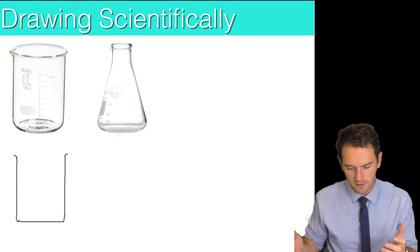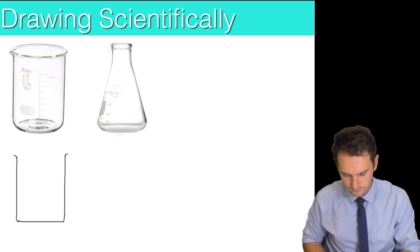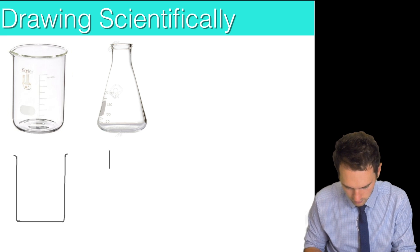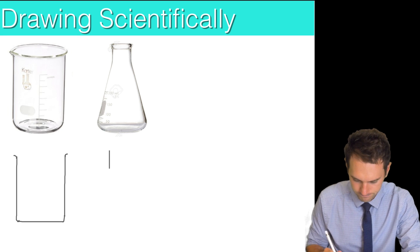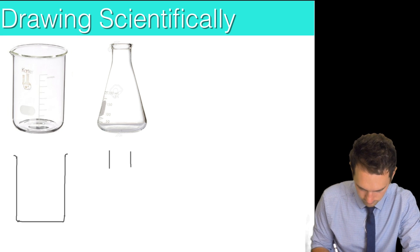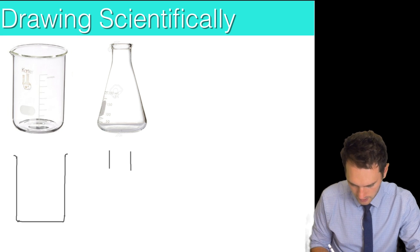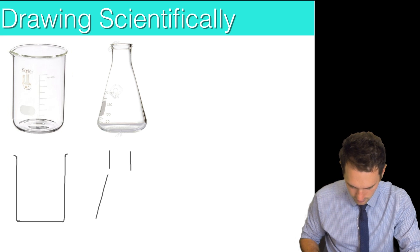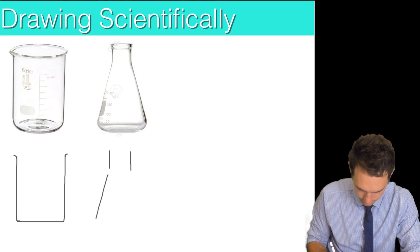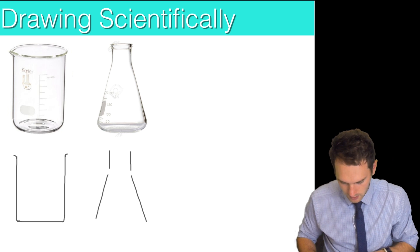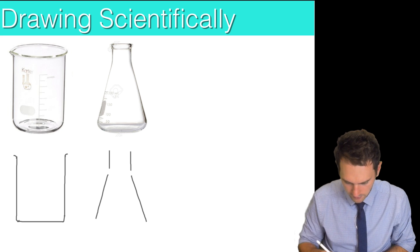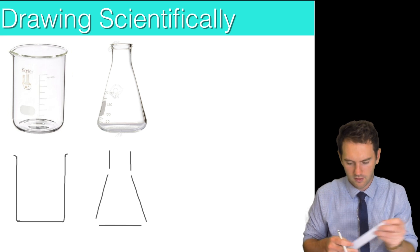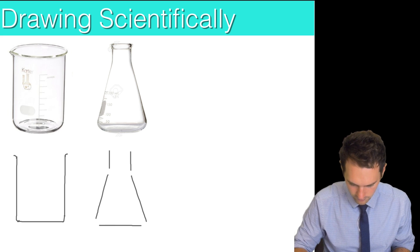What about a conical flask? Very similar. I'm going to draw my two lines for the top and draw my angular lines like so. My base line and then I'm going to connect all the gaps by freehand.